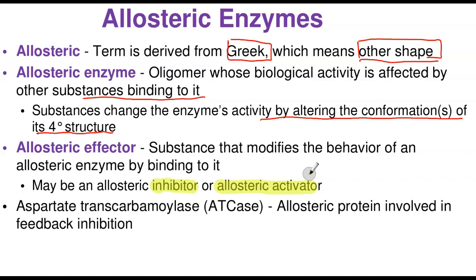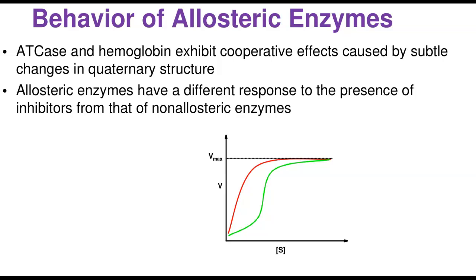A very good example of an allosteric enzyme is aspartate transcarbamoylase, called ATCase for short. ATCase is an allosteric protein also involved in feedback inhibition. Feedback inhibition means that when you reach the end product and have a lot of it, the end product goes back and signals the early reactions to stop producing more until supplies run out.